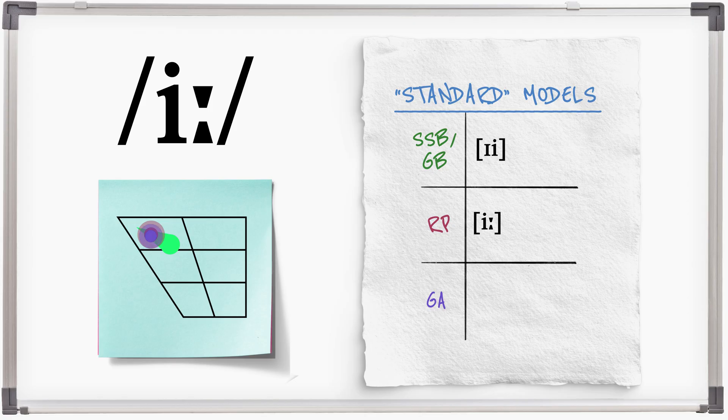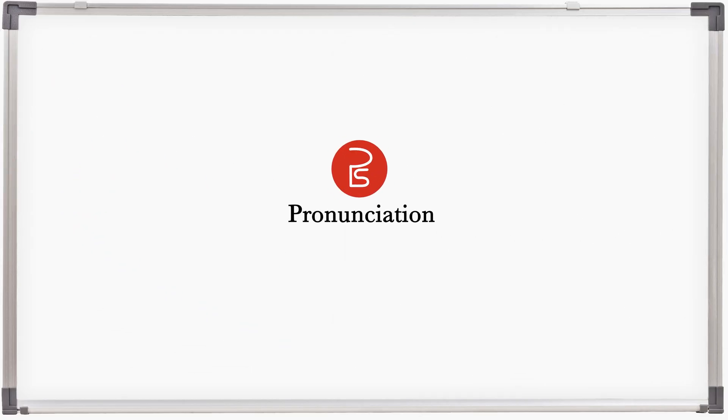General American is also monothongal for this sound. E, cheap eats. Pronunciation Studio.